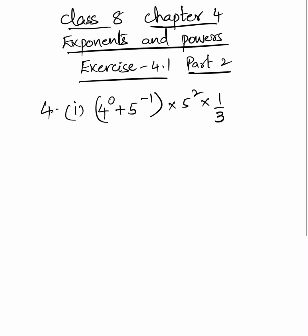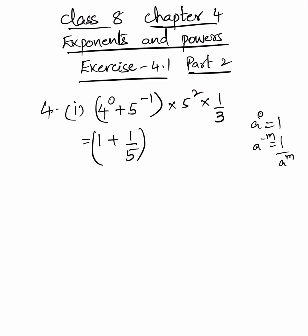That is equal to: we know that a power 0 equals 1, and a power minus m equals 1 by a power m. Therefore, 4 power 0 is 1, plus 5 power minus 1 is 1 by 5, into 5 square, into 1 by 3.